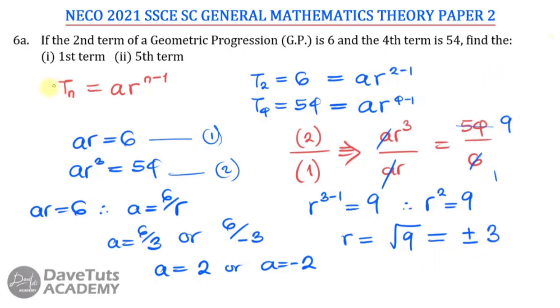So that being said, we can now say we want to go and look for whatever end term that we are being asked to get. Like in this case, we are asked to find the first term and the fifth term. We have gotten the first term that the first term can be either 2 or minus 2, and that is very good. Then for us to get the fifth term, let me just clear some section of this board.